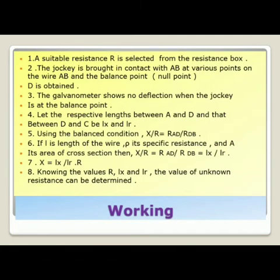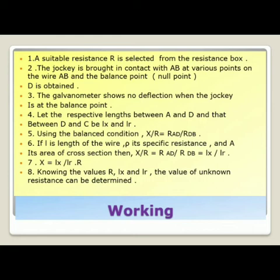For working the meter bridge: a suitable resistance is selected from the resistance box. The jockey is brought into contact with wire AB at various points and the balance — null point D — is obtained. The galvanometer shows no deflection when the jockey is at the balance point. Let the respective lengths AD and DB be LX and LR. Using the balanced condition, X upon R equals R(AD) divided by R(DB), which equals LX upon LR. Therefore, the unknown resistance X equals (LX divided by LR) multiplied by R.